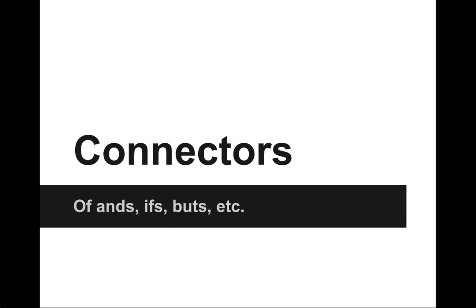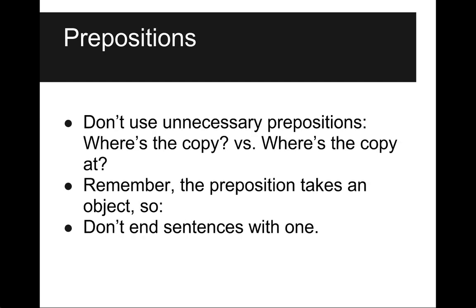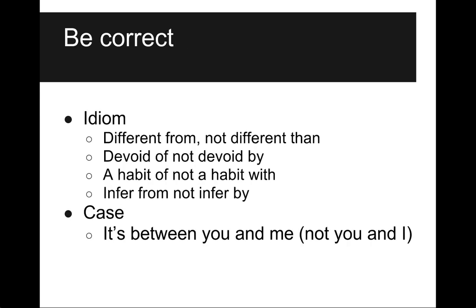Finally, connectors — ands, ifs, buts, etc. Prepositions show the relationship between the noun following it and something else in the sentence: 'The president walked into the room.' Everything has a noun or pronoun object. Common prepositions include above, across, after, at, by, for, whatever — that whole list. Don't use unnecessary prepositions — 'Where's the coffee' versus 'where's the coffee at?' The preposition takes an object, so don't end a sentence with one. Be correct and know the idioms: 'different from,' not 'different than.' 'Devoid of,' not 'devoid by.' 'A habit of,' not 'a habit with.' 'Infer from,' not 'infer by.' And for case — it's 'between you and me,' not 'you and I.' Substitute 'me' or 'I' without the 'you' in these sentences and you'll figure out which one's right.